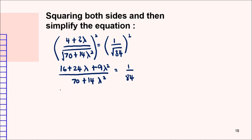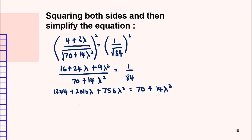Rearranging and simplifying, we get 1344 + 2016λ + 756λ² equals 70 + 14λ². Collecting like terms gives 742λ² + 2016λ + 1274 equals 0.